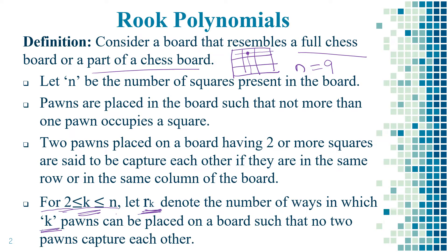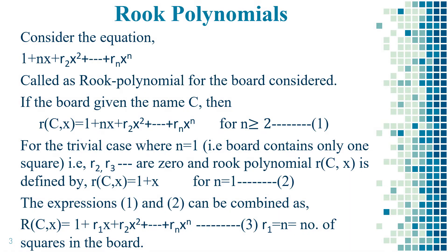If we are placing 3 pawns, that is k = 3, then we calculate r3 — the total number of placements of 3 pawns on the given squares. This equation is known as the rook polynomial: 1 + nx + r2·x² + ... + r_n·x^n. If the board is given the name C, then r(C, x) = 1 + nx + r2·x² + ... + r_n·x^n, for n ≥ 2. Let this be equation 1.